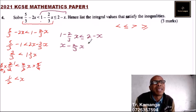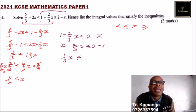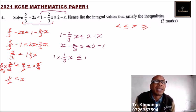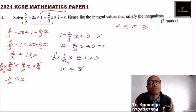We take 2 over 3x to the other side, and take 1 to the other side where it becomes minus. So less than or equals to 2 minus 1, which is 1. We have x minus 2 over 3x, giving one-third x, less than or equals to 1. Multiplying both sides by 3 gives x less than or equals to 3.